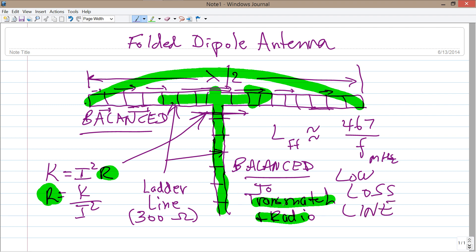You might replace that transmatch, by the way, with a 4 to 1 balun. You could use a 4 to 1 balun instead of the transmatch. You need to cut this antenna though to the correct length. And if you want to keep that 1 to 1 SWR, you have to stay at the frequency that you cut the antenna for.